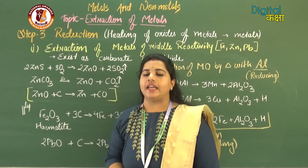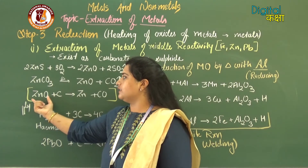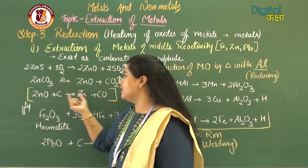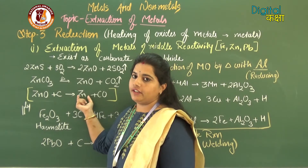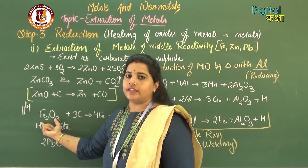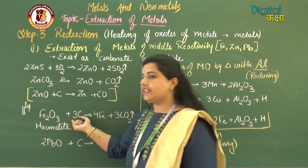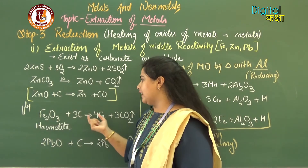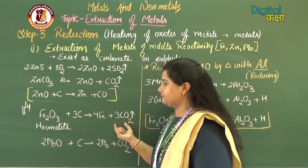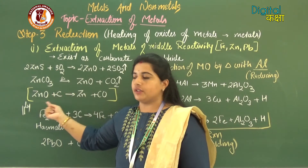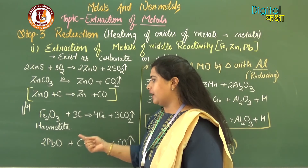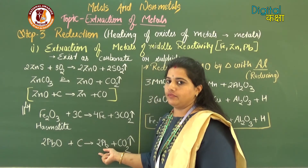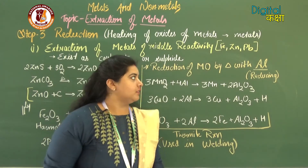For reduction of middle reactive elements, a reducing agent like carbon is added to the oxide. Carbon removes oxygen from zinc oxide as CO, forming zinc metal. Similarly, iron oxide (Fe2O3), commonly called hematite, is treated with carbon — the carbon removes oxygen to give free iron and CO2. Lead oxide treated with carbon also yields free lead metal and CO2.